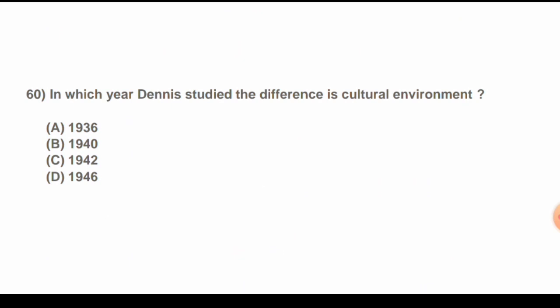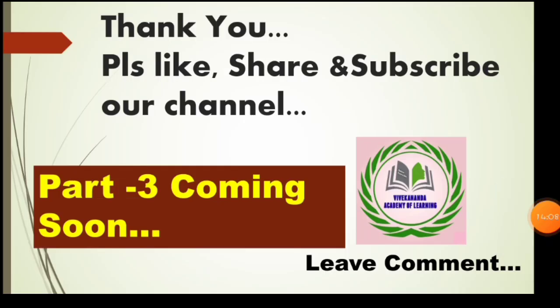Question 58: In which year did Dennis study the differences in cultural environment? Options are: A) 1936, B) 1940, C) 1942, D) 1946. The correct answer is A) 1936.